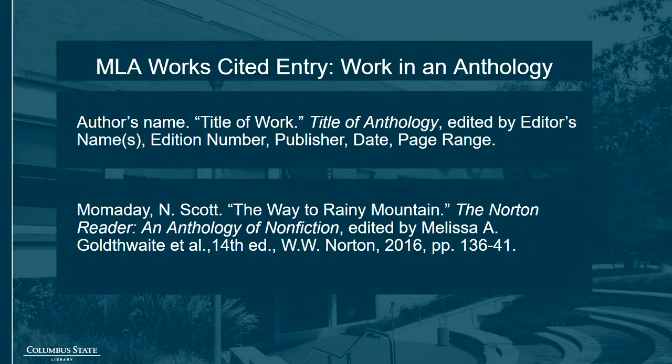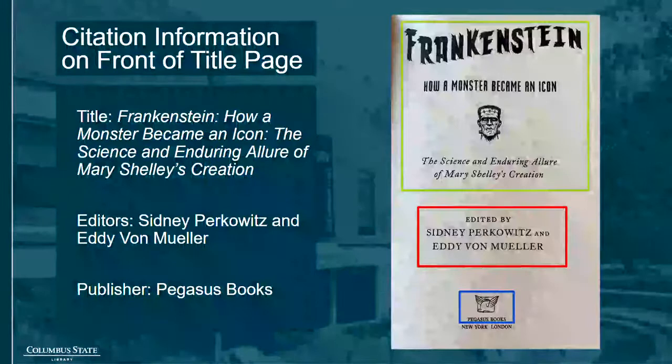To cite a work in an anthology, follow this format. Begin with the author's name, last name first, followed by a period. Then give the title of the particular essay, poem, short story, or article that you want to cite, followed by another period. Then give the name of the anthology in italics, the editor's name, the edition number if given, the publisher, the date, and the page range of the work, all separated by commas. A period goes at the end.